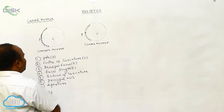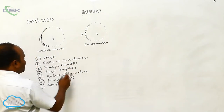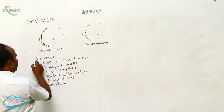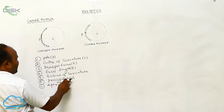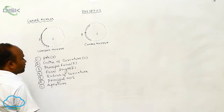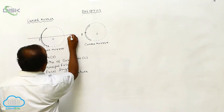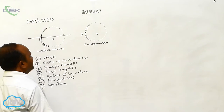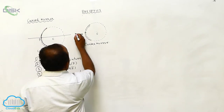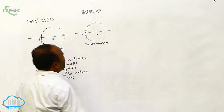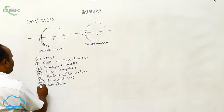What is the principal axis? The imaginary line passing through the pole and the center of curvature is called the principal axis.